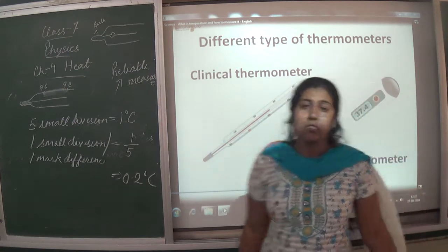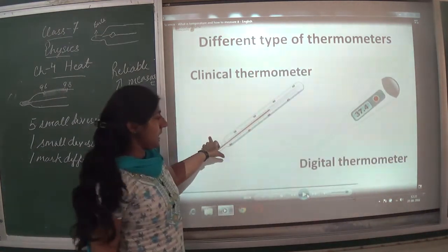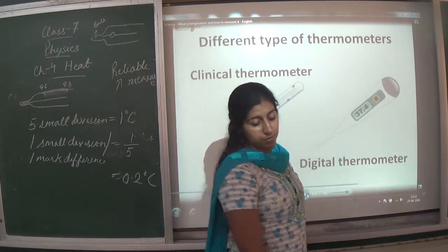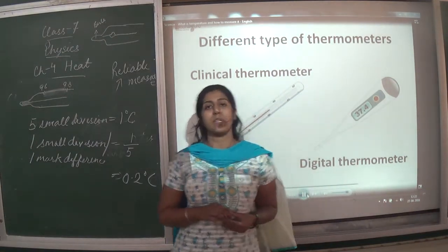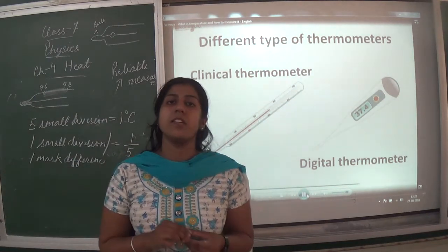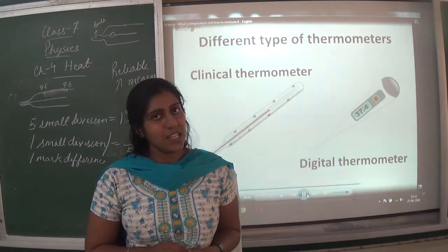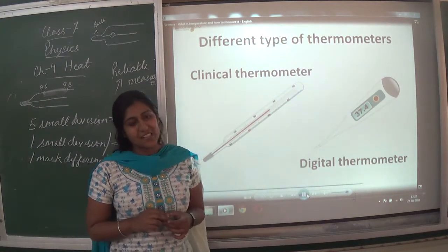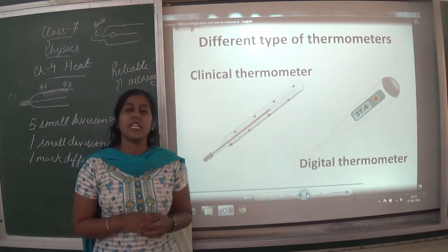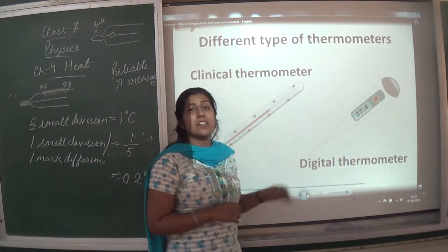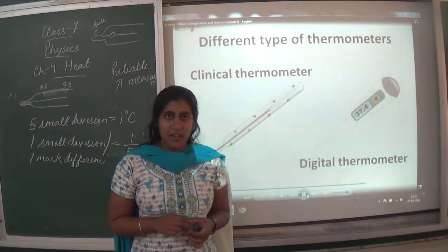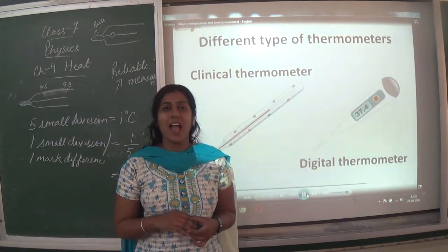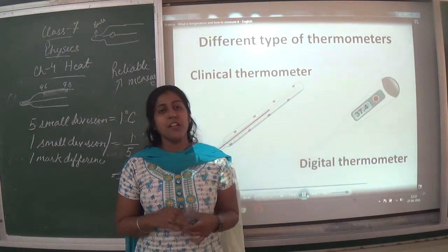There are two different types of thermometer. One is the clinical thermometer and another is the digital thermometer. We use the digital thermometer because the clinical thermometer contains mercury, which is toxic and difficult to handle if it falls or breaks. The digital thermometer is a more reliable instrument as it does not contain mercury and is not harmful.